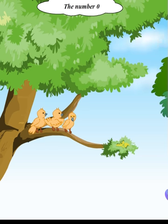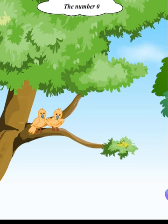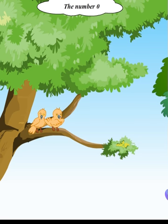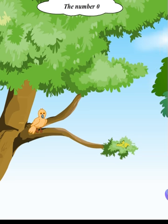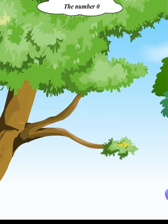Three little birds sitting on a tree, one flew away and then there were two. Two little birds sitting on a tree, one flew away and then there was one. One little bird sitting on a tree, one flew away and then there were none.